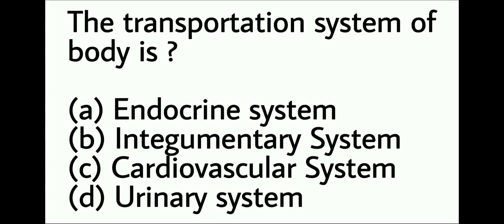Question number one: The transportation system of the body is — option A: endocrine system, option B: integumentary system, option C: cardiovascular system, option D: urinary system. I know this is a very easy question but we have to start from the basics. The right answer is option C. Cardiovascular system is also known as the transportation system of the body.